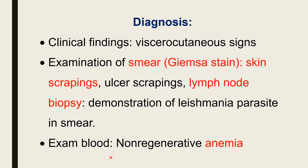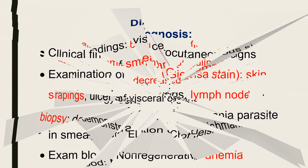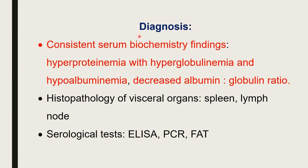Examination of blood reveals non-regenerative anemia — anemia is present but there is no regeneration of the RBCs. There is a consistent serum biochemistry finding: the serum shows hyperproteinemia with hyperglobulinemia — increased globulin level — and hypoalbuminemia — decreased albumin level. This causes a decreased albumin-to-globulin ratio.